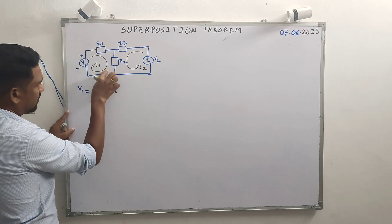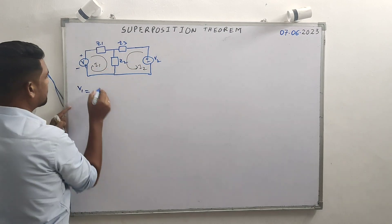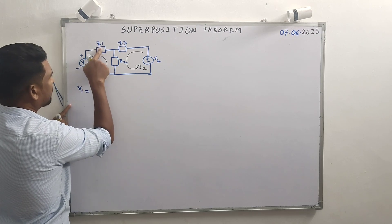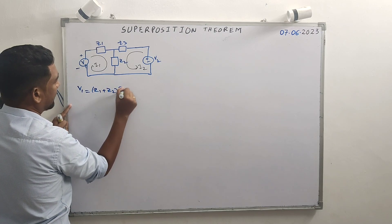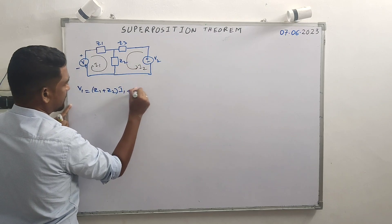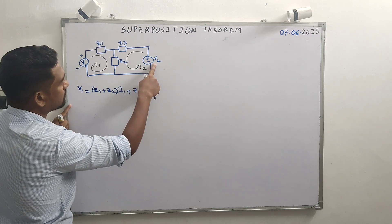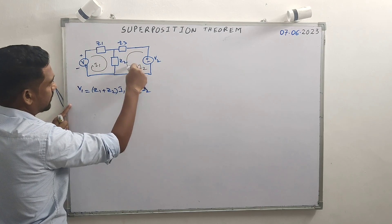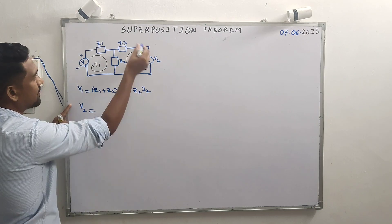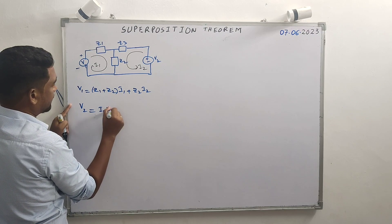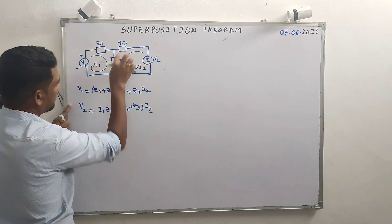With respect to the first loop, V1 equals — i1 and i2 are in the same direction, so no negative sign. The drop gives us Z1 plus Z2 times i1, plus Z2 times i2. That's equation 1. For the second loop, V2 equals Z2·i1 plus (Z2 plus Z3)·i2, because they are in series.